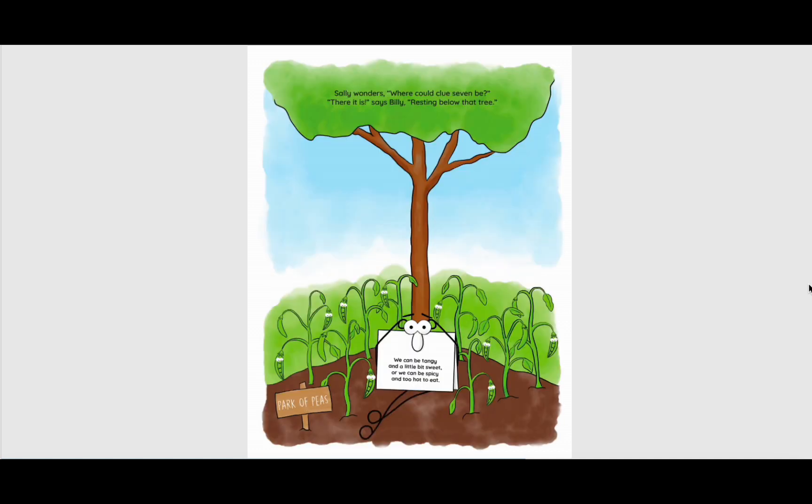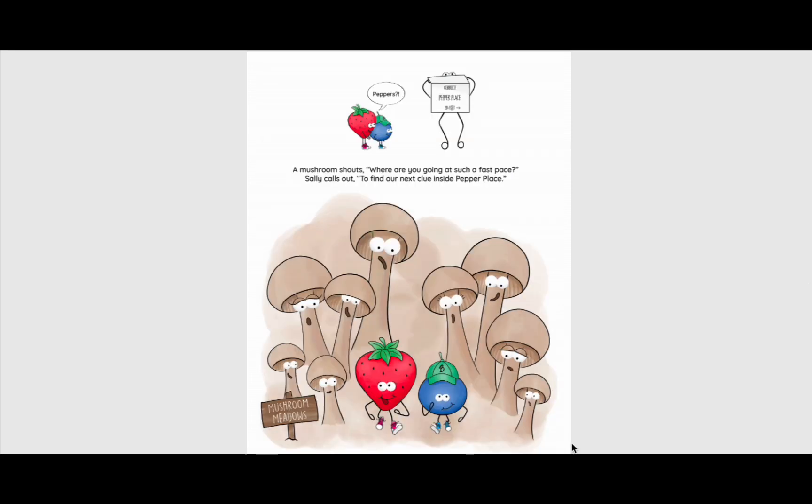Sally wonders, where could clue seven be? There it is, says Billy, resting below that tree. We can be tangy and a little bit sweet, or we can be spicy and too hot to eat. Peppers. Pepper Place. A mushroom shouts, where are you going at such a fast pace? Sally calls out to find our next clue inside Pepper Place.